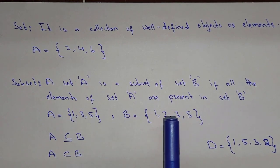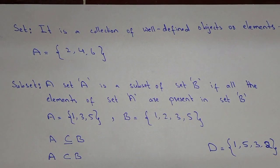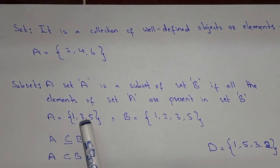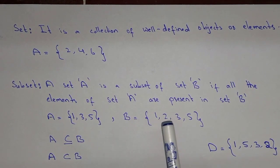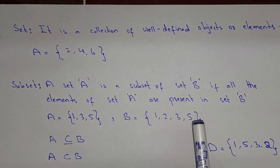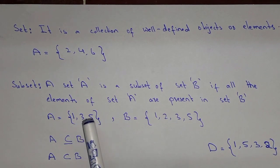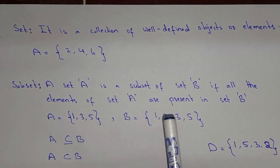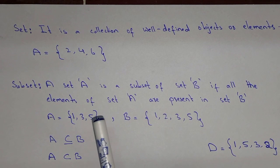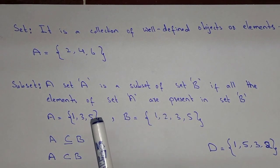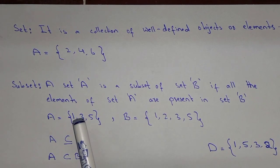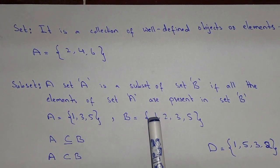Now here it is clear. We will now learn about the proper subset as well as the improper subset. You can see that here we have set A which has the elements 1, 3, and 5, and we have set B that has the elements 1, 2, 3, and 5. You can see that set A is smaller than set B, but all the elements of set A are present in set B. So in that case, we can say that A is the proper subset of set B.